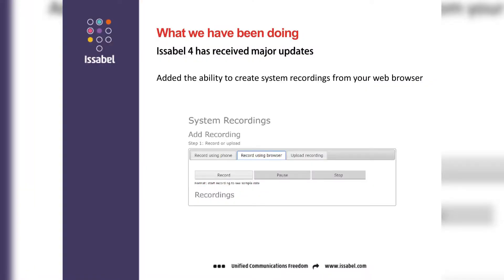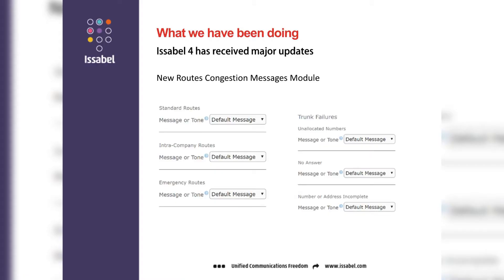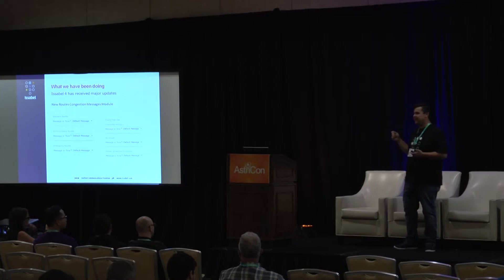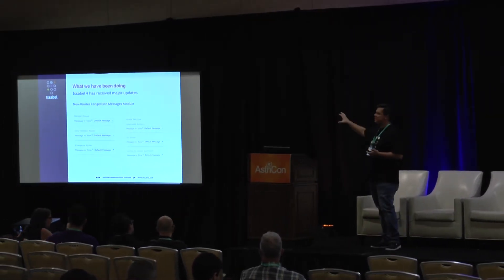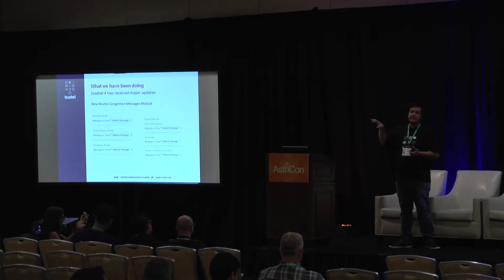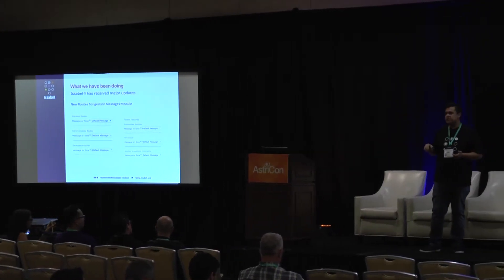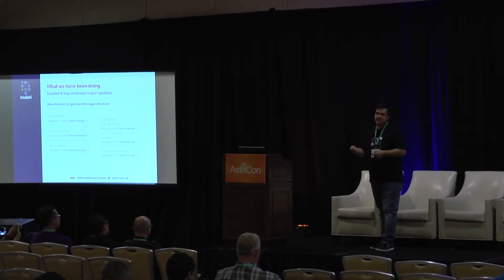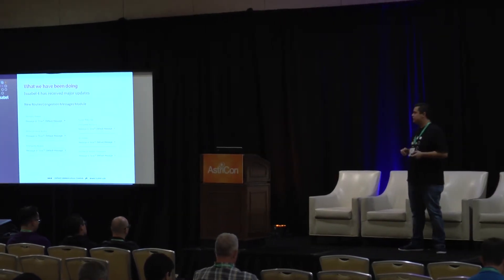System recordings — you can now do them through the browser. Some people have professionals doing the recordings, some people are lazy, but you can do it on your web browser. We also have a route congestion message module. It happens a lot that users dial a number without the right prefix and get an operator message saying the number is not in service. With this module, you can put specific messages for those cases, which will save headaches especially with users in call centers.